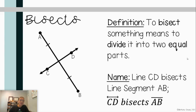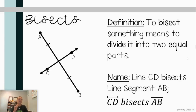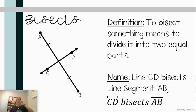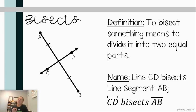Bisect — you may have heard this word before. It literally means to divide into two equal parts. Look at the terminology in the naming section: line CD bisects line segment AB. Line CD has arrows on both ends so we know it's a line. Bisect means it cuts in half line segment AB. I want you to notice the little hash marks — they indicate that those two segments are congruent, equal in length. This pulls all the geometry terminology together.